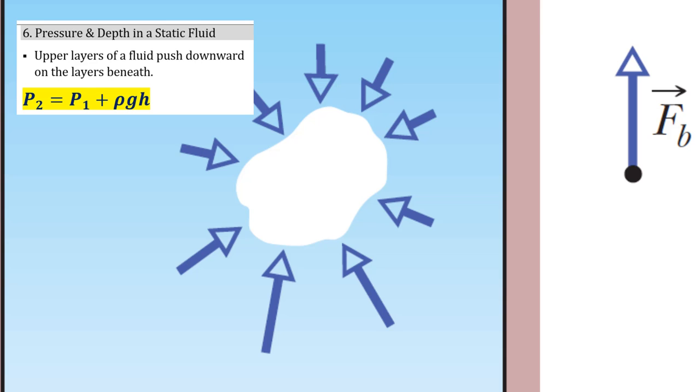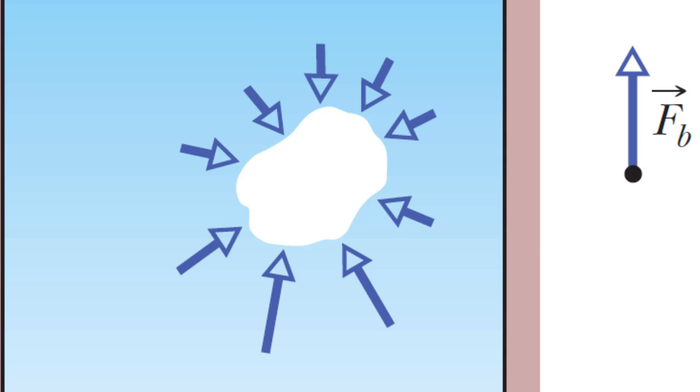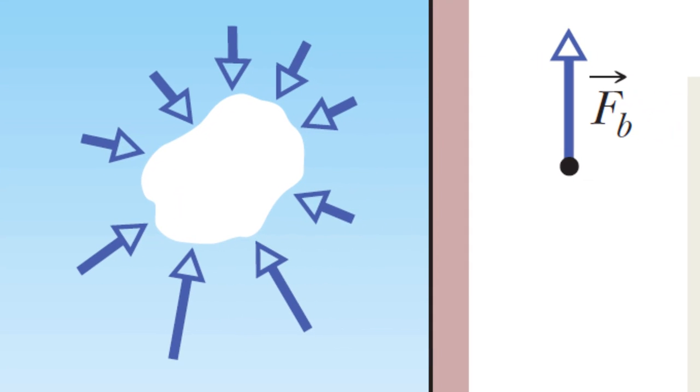Which is, again, basically saying the deeper you go, the greater the pressure. All of these randomly oriented force vectors can be represented with this net buoyant force vector, which is pointing straight upward. That's the buoyant force.